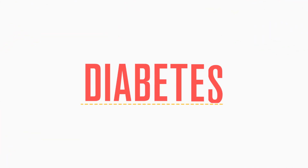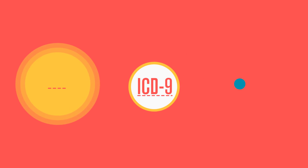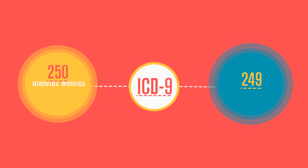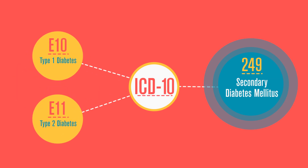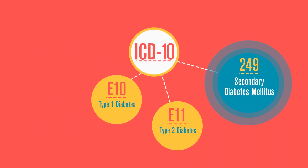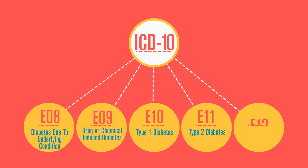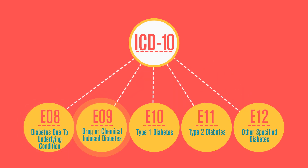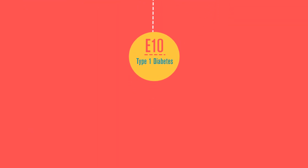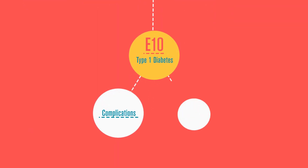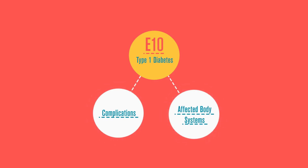Let's look at how this all works, using the example of diabetes. ICD-9 has two major categories of diabetes codes: diabetes and secondary diabetes. But ICD-10 separates type 1 diabetes from type 2 diabetes. ICD-10 also eliminates the broad category of secondary diabetes, instead offering secondary options such as underlying conditions or causes.